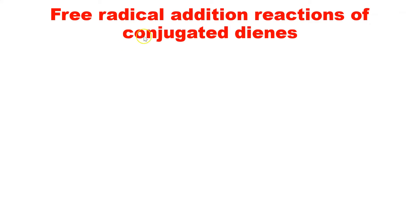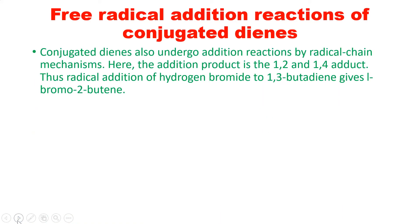Now the next point is free radical addition reactions of conjugated dienes. In the case of the anti-Markovnikov rule we have seen it only for alkenes, but here it is conjugated dienes, so a similar kind of mechanism we will see in this case also. Conjugated dienes also undergo addition reaction by radical chain mechanism, and here the addition products we get are 1,2 and 1,4.